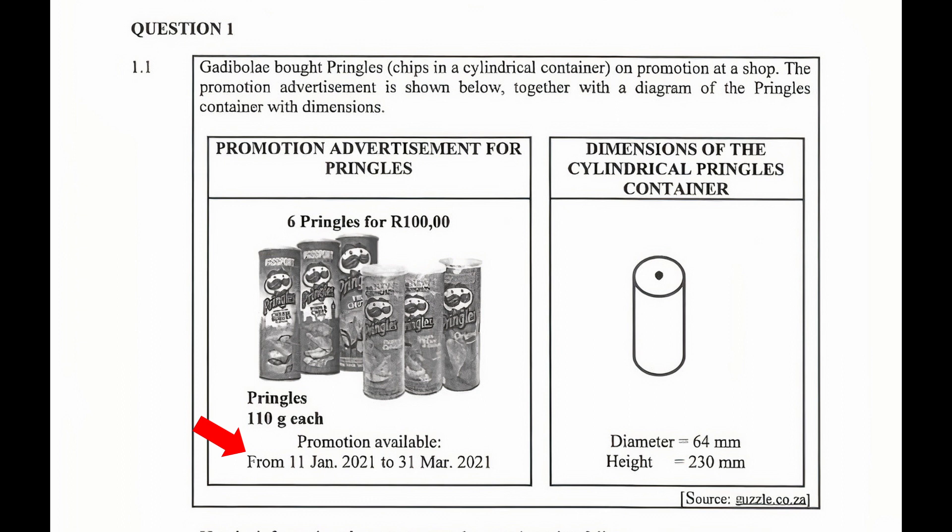On the right we have the dimensions of the cylindrical Pringles container. The diameter is equal to 64 millimeters and the height is equal to 230 millimeters.